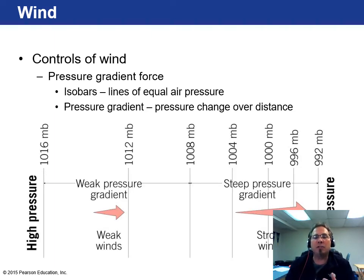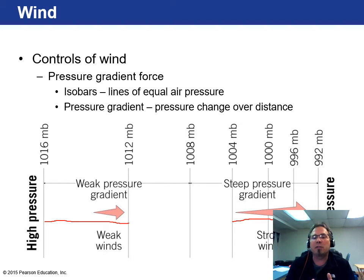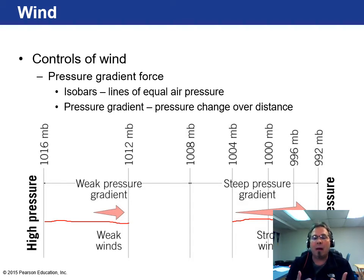Here's an image showing what pressure gradients look like. When areas of different pressure have very long spacing between their lines, you have weak winds. But when you have a bunch of lines clustered together, you get a steeper pressure gradient and stronger winds. You can see this on weather forecasts when they show pressure gradients on windy days. During hurricanes, those lines get extremely close together, producing winds of 90, 100, even 150 miles per hour.